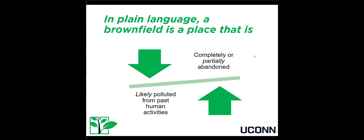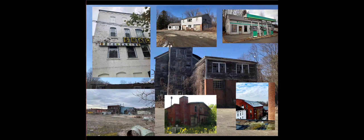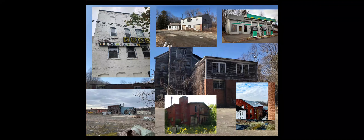In plain language, a brownfield is a place that people previously used and that is now abandoned, typically with vacant, dilapidated buildings. Brownfield sites are also likely polluted from past human activities, usually commercial or industrial. A picture is a thousand words, so here are some typical examples of brownfields around New England.